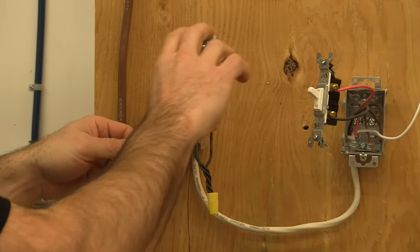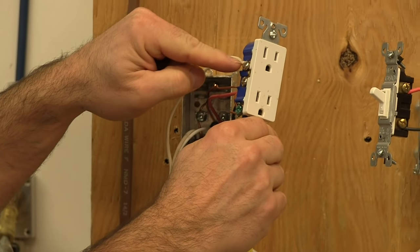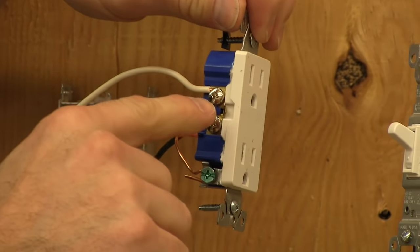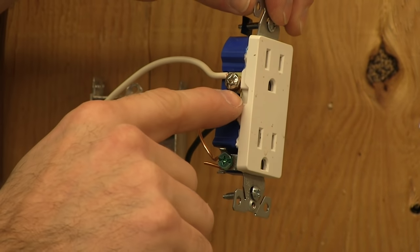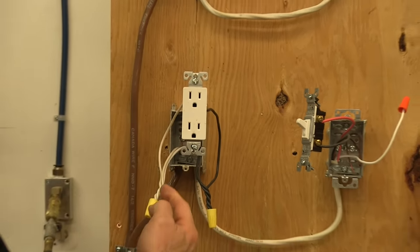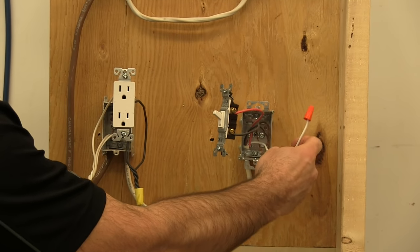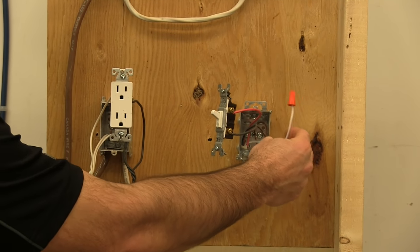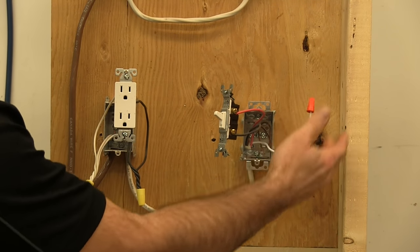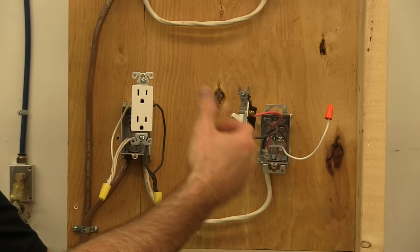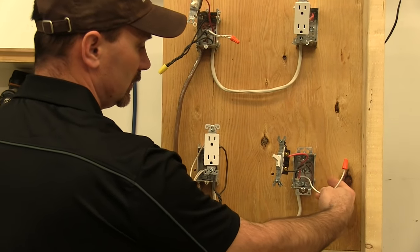As far as the neutrals go, neutrals are all just pigtailed together. Got a jumper coming off going to the neutral side. We don't break the tab out here, okay? Because both of these can still share the same neutral, so this tab does not get broke out. The other neutral line is heading over to the switch. In a lot of areas now, they're asking by code to have a neutral available at every switch location. So in this case we're not using it—I've just capped it off. We don't need it. If you had a dimmer or a timer, some of them would require that you need that, and that's why they're asking in the new codes to put it there.